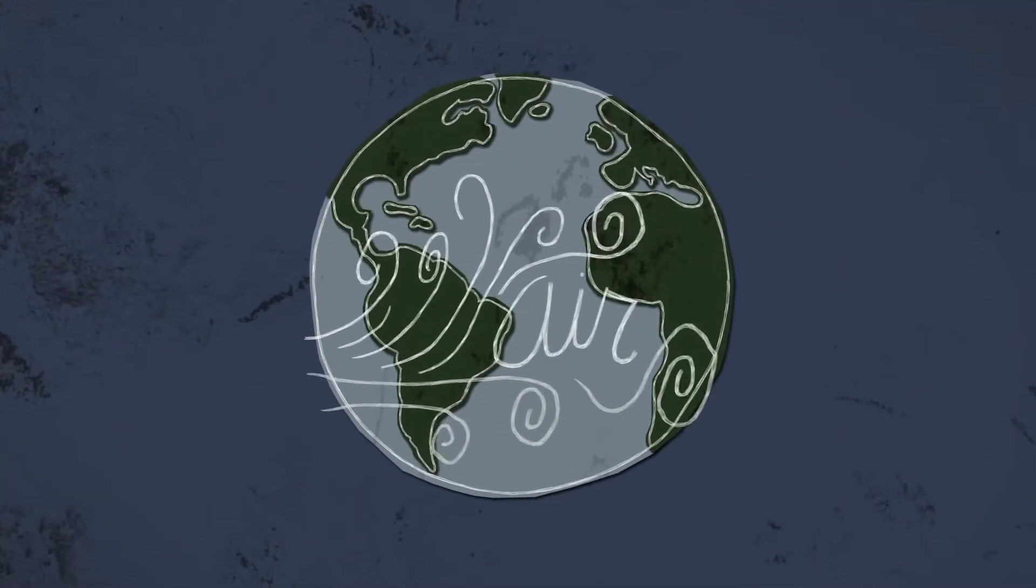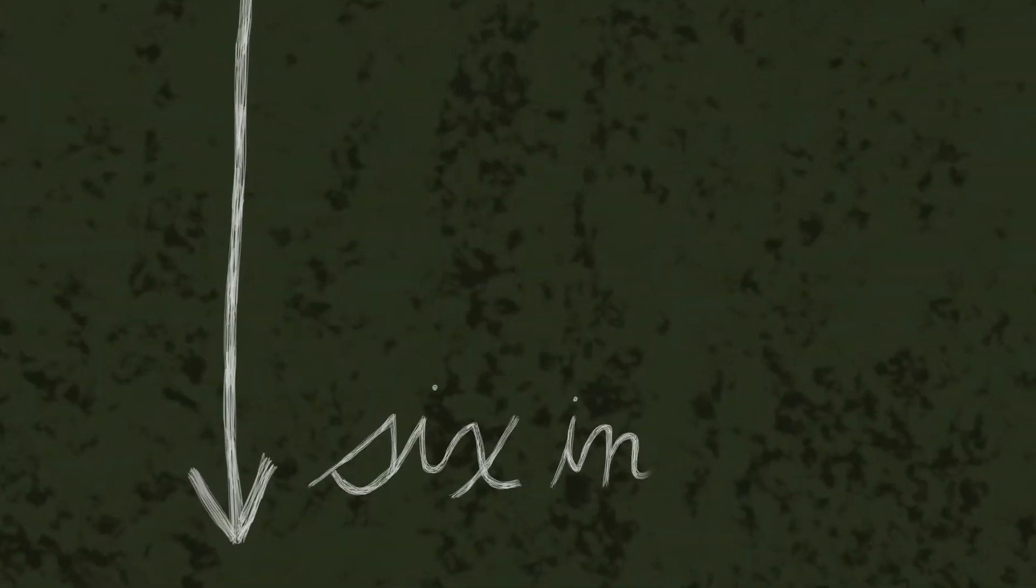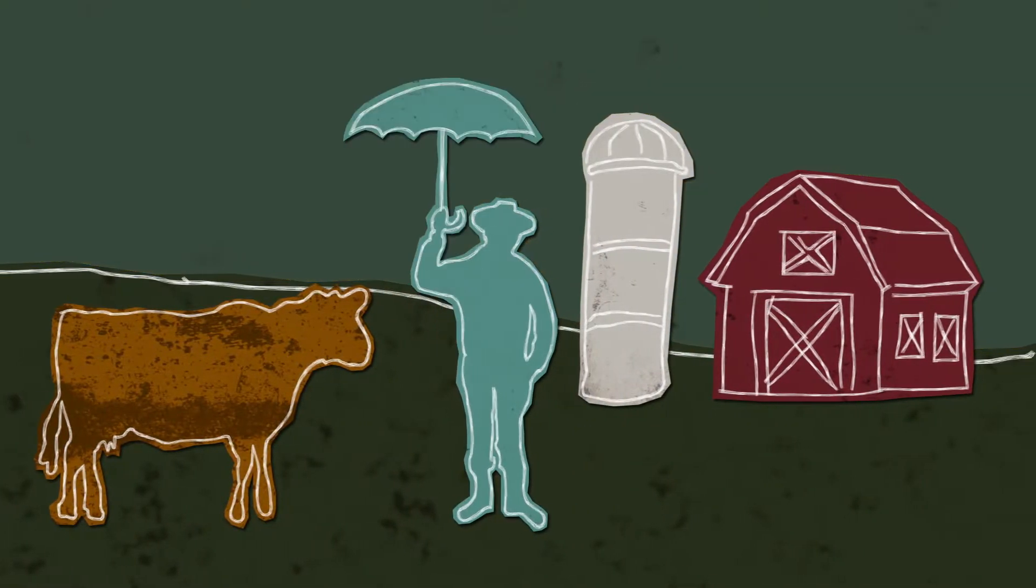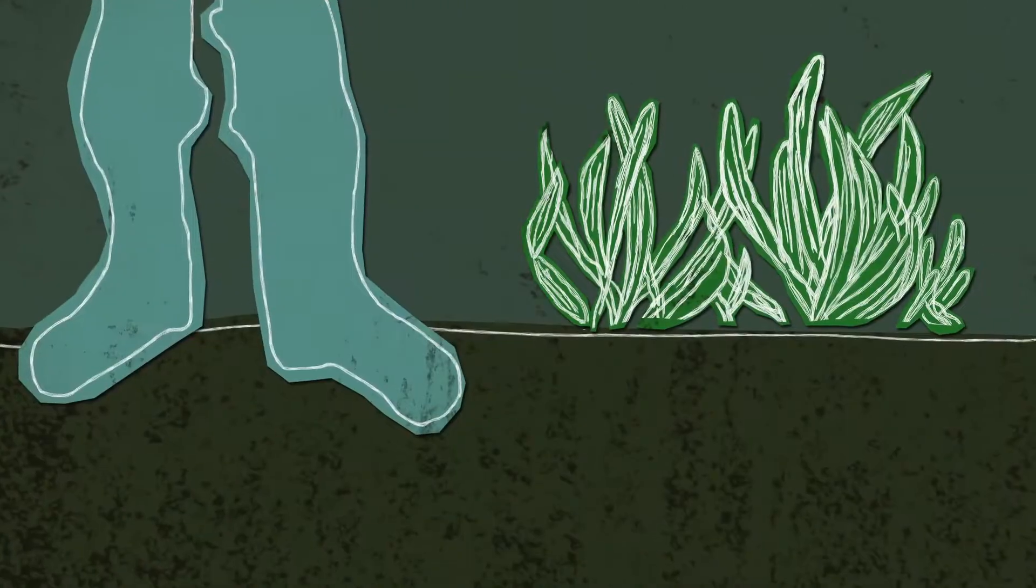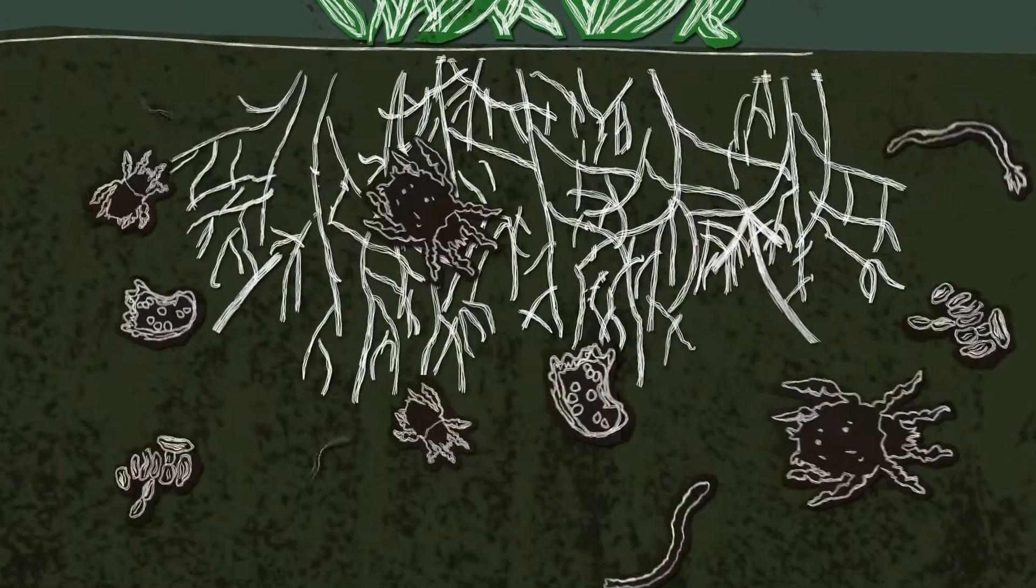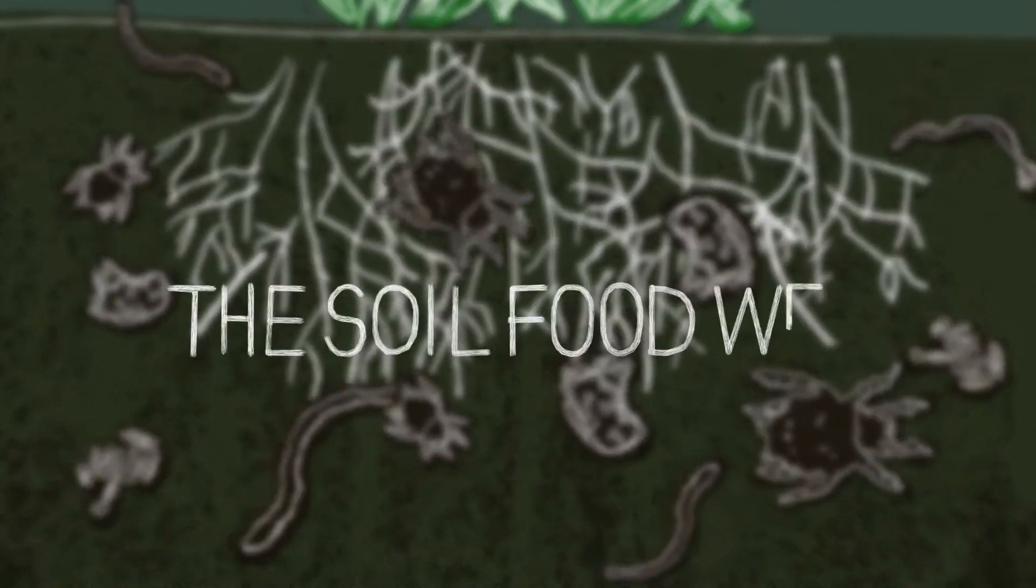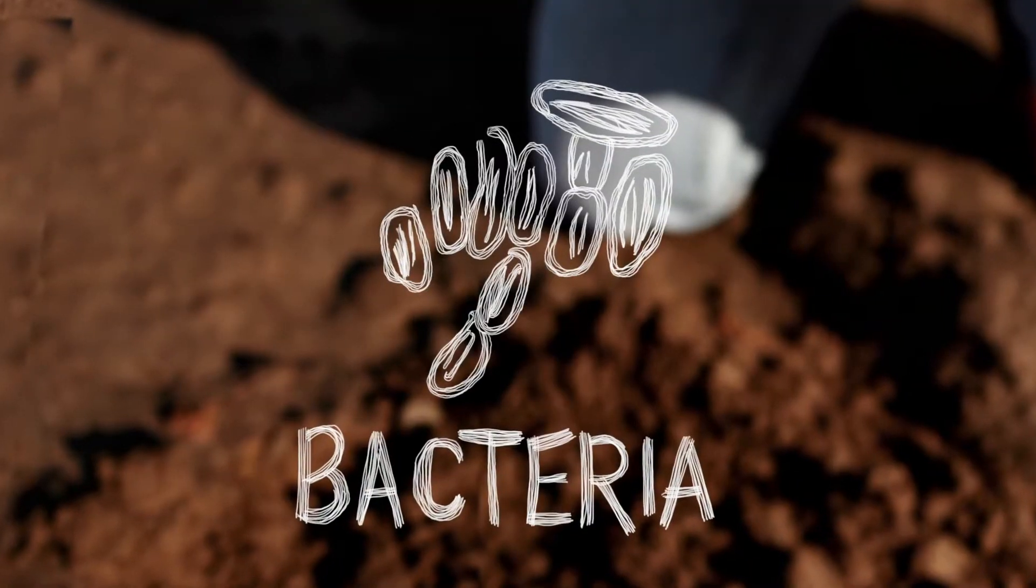We all share the same air and the same water, and we owe our existence to six inches of topsoil and a little bit of rain. Beneath our feet, an invisible world teams with life. These complex interactions create a soil food web with millions of nematodes, protozoa, and tiny microbial creatures.